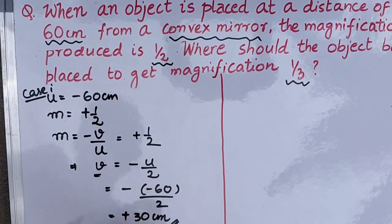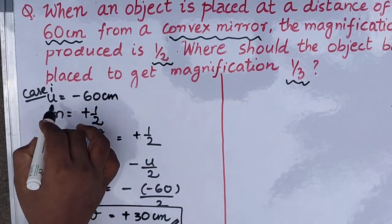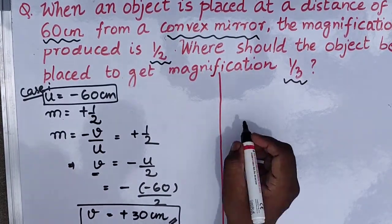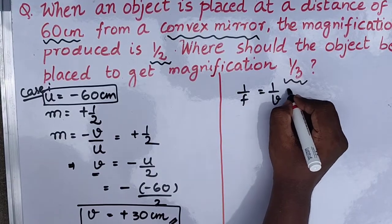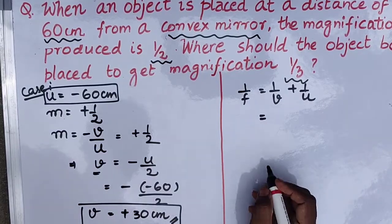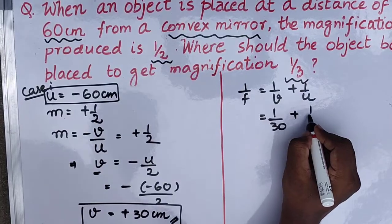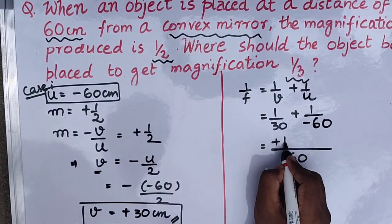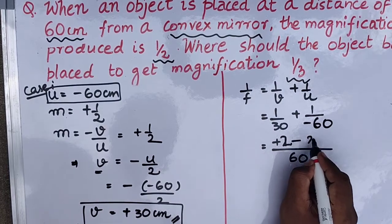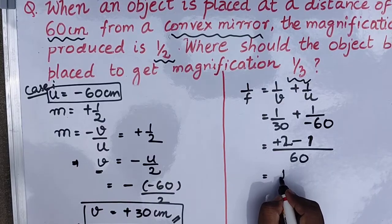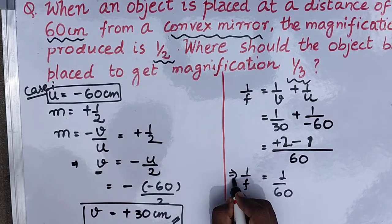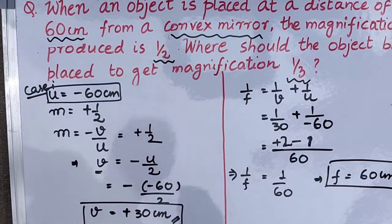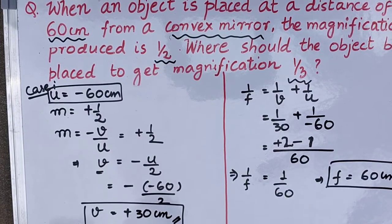Now that we have the value of v and u, we can find the focal length. Using the mirror formula: 1 by f is equal to 1 by v plus 1 by u. Substituting, that is 1 by 30 plus 1 by minus 60. Taking the LCM of 30 and 60, which is 60, we get plus 2 minus 1 equals 1 by 60. So 1 by f equals 1 by 60, meaning f equals 60 centimeters.